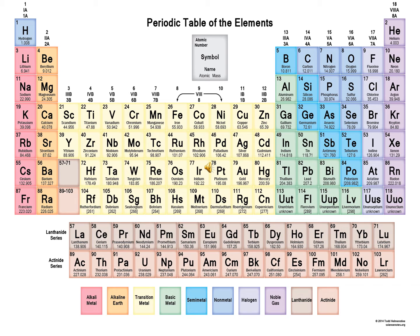So we have seven periods — horizontal rows going left to right — and 18 groups — vertical columns going top to bottom. The group numbers 1 to 18 are written on the top of each group. Roman numerals were used in an earlier method of classification, but we no longer follow that system.